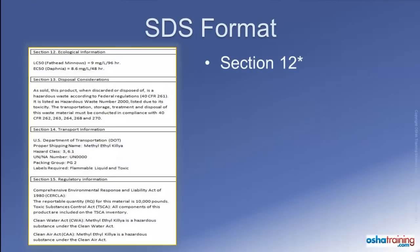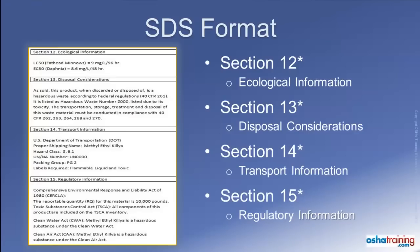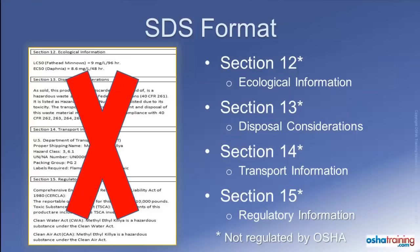Section 12, Ecological Information; Section 13, Disposal Considerations; Section 14, Transportation Information; and Section 15, Regulatory Information — all deal with requirements regulated by other entities, such as the Environmental Protection Agency or the Department of Transportation. Therefore, these sections are not regulated by OSHA, but appear in the Safety Data Sheet to be consistent with the GHS format.